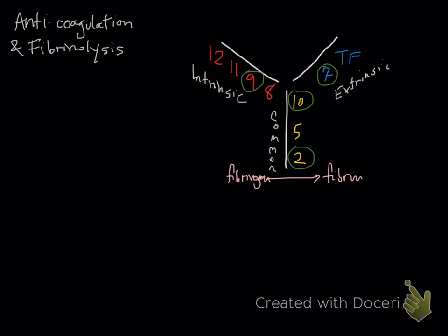In this lecture on anticoagulation and fibrinolysis, we're going to essentially talk about why we don't turn into a giant blood clot. A blood clot is a fibrin clot, and that is what coagulation does. All of these factors are procoagulants, and we have in our body anticoagulants and things that allow us to break up clots, which is called fibrinolysis.